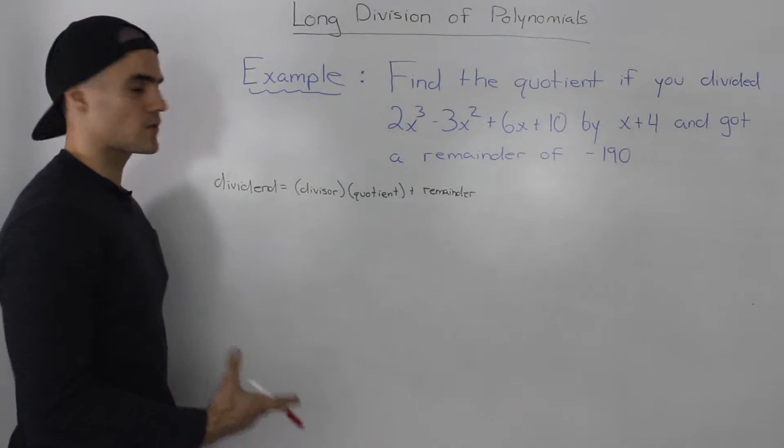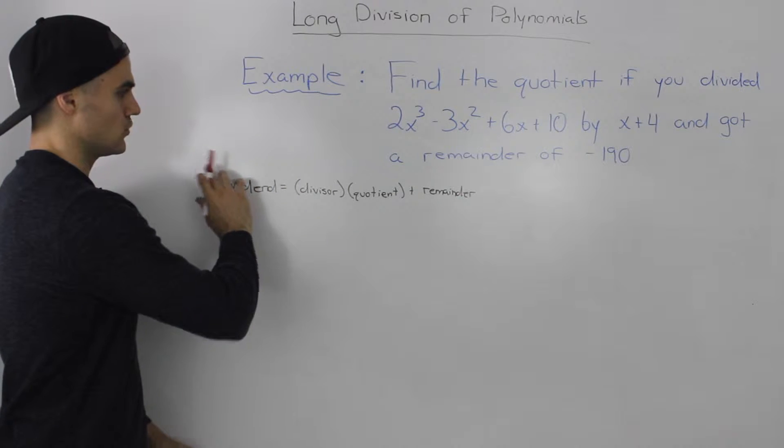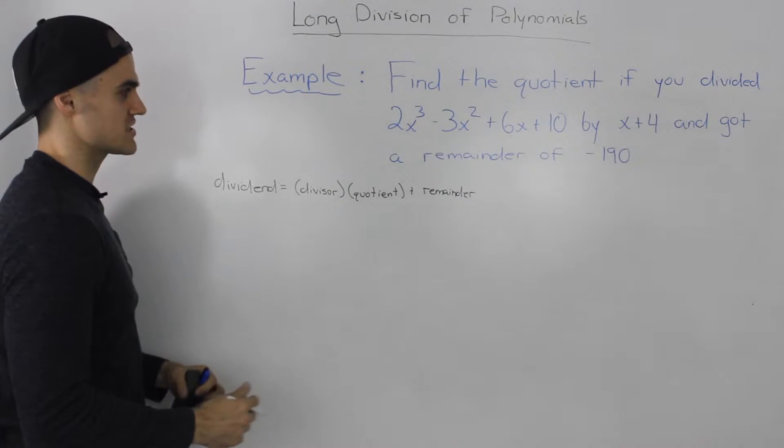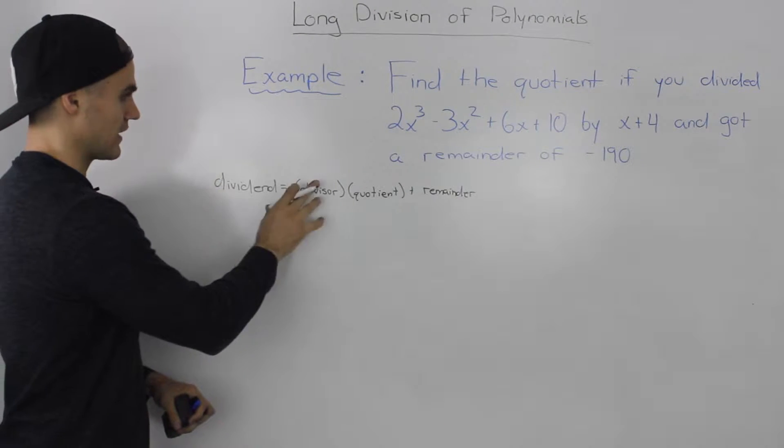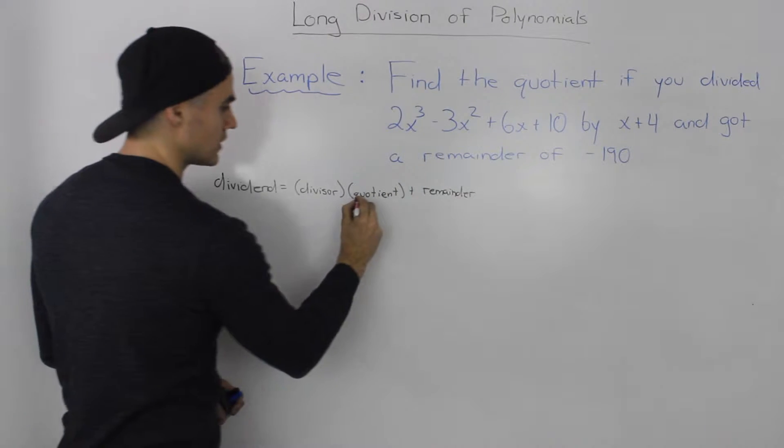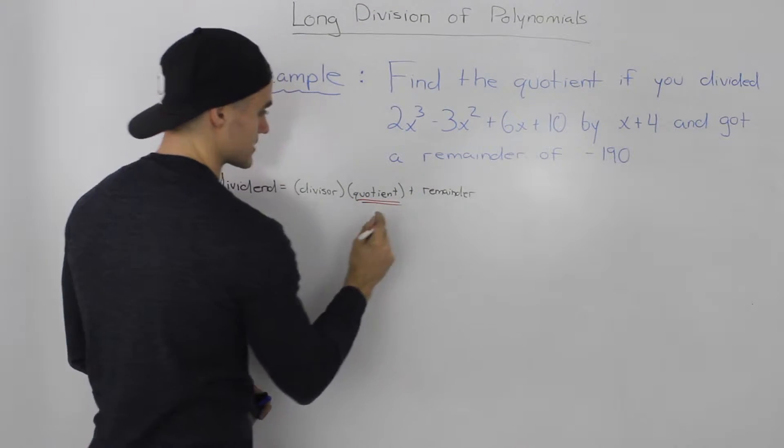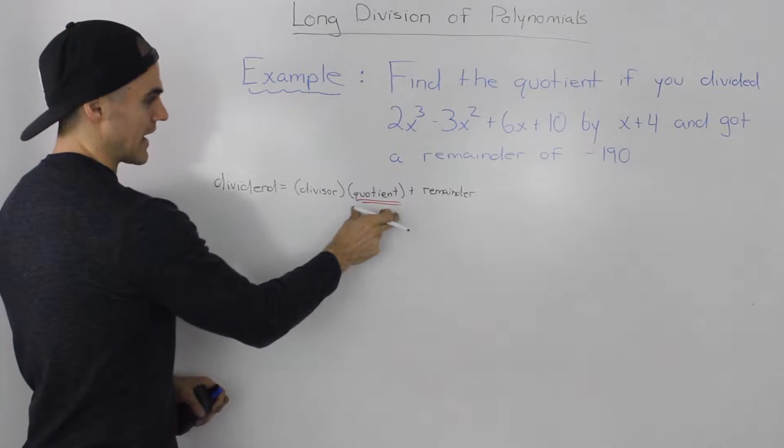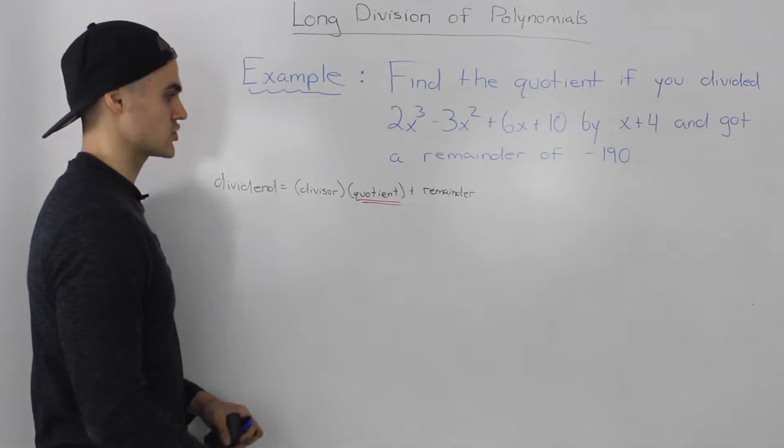The first thing you always want to do when you get a question like that is write out the division statement and then find out what are you trying to isolate for. We're trying to find the quotient in this case so we're going to have to isolate it in this expression.